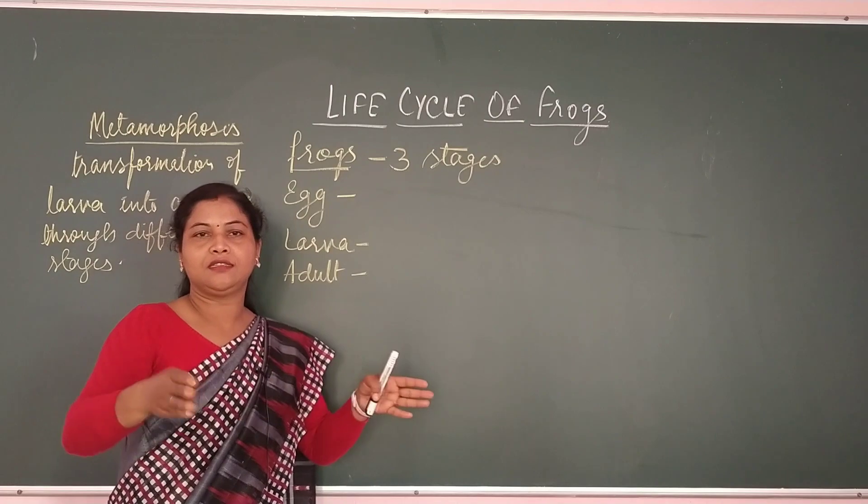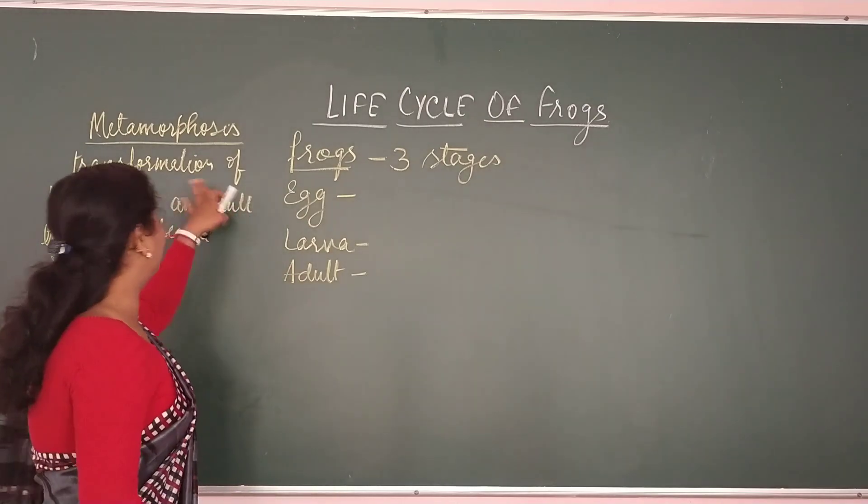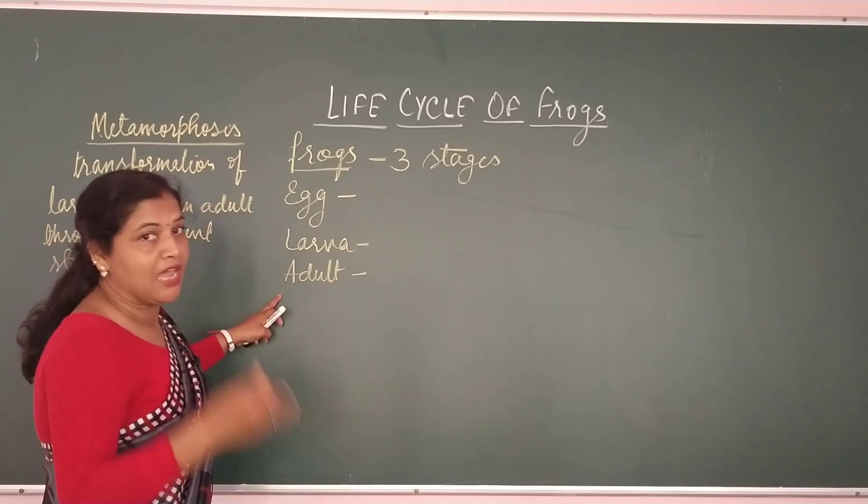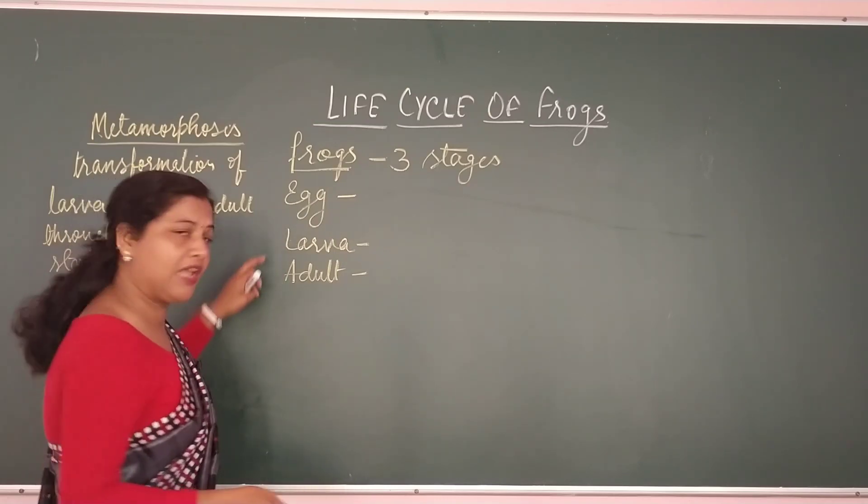So this is what they go through, different changes from larvae to adult. And these changes, this process is what known as metamorphosis. So frogs goes through these changes. And how many stages are there? Eggs, larvae and adult.